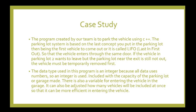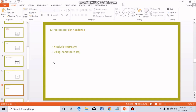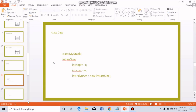The data type used in this program is integer, because all data uses numbers. The program includes the capacity of the parking lot or garage. There is also a variable for entering vehicles into the garage, and it can be adjusted how many vehicles will be entered at once to make the process more efficient. The implementation covers abstract data type analysis and code implementation for the vehicle parking problem.